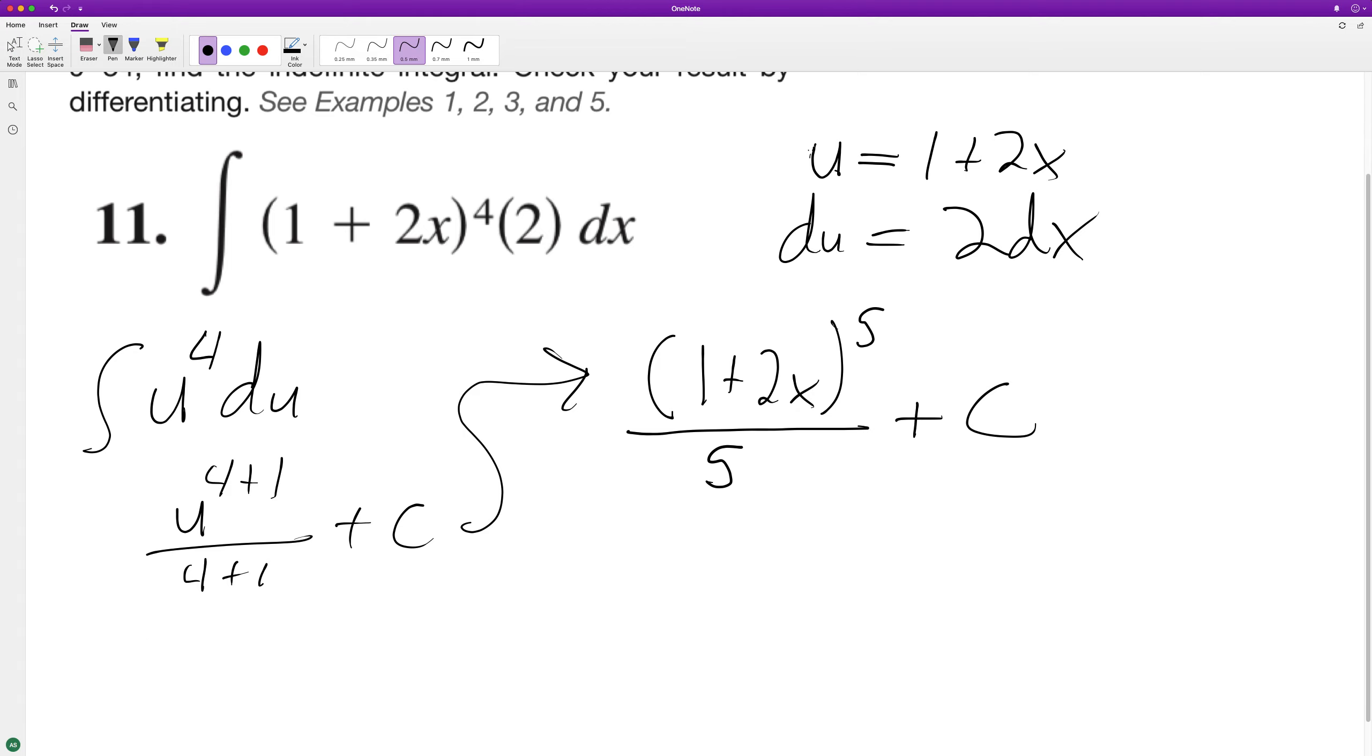That's the solution. Now let's test it by taking the derivative. We get 5 times—because we pull the exponent down—and we take the derivative of the inside, which is just 2. Then we have (1 + 2x) raised to the fourth because we subtract one from the exponent. The derivative of C is zero.